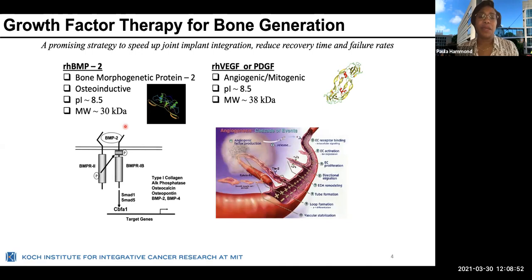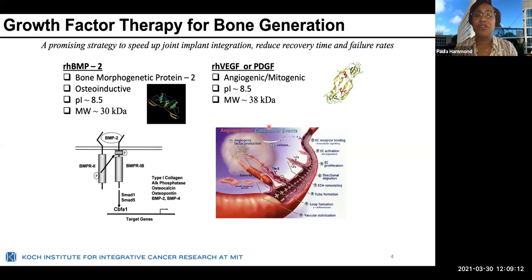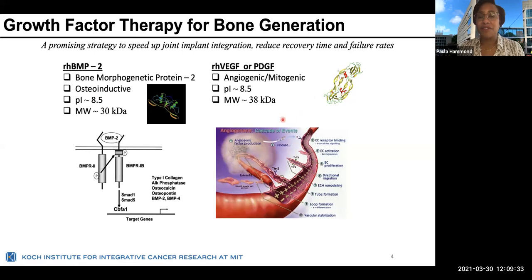The growth factors we examined include bone morphogenetic protein 2 (BMP-2), which is a highly osteoinductive growth factor. Because it has an isoelectric point around 8.5, we can incorporate it as a positively charged component in a layer-by-layer film. We're also interested in generating a vascular system. BMP-2 elicits mesenchymal stem cells from nearby bone marrow and induces differentiation into osteoblasts, which produce bone. We also want something that supports generation of a vascular system, particularly important for cranial defects where we want highly vascularized, thick bone to grow.